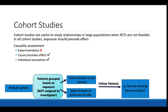If we wanted to run a cohort study on our scurvy example, we have a group of British sailors and we're going to group them based on exposure. We put a group of sailors known to eat lemons into one group and a group of sailors known to drink lots of cider into another. Then we follow them forward in time and see if there's a decrease in scurvy among the lemon eaters.